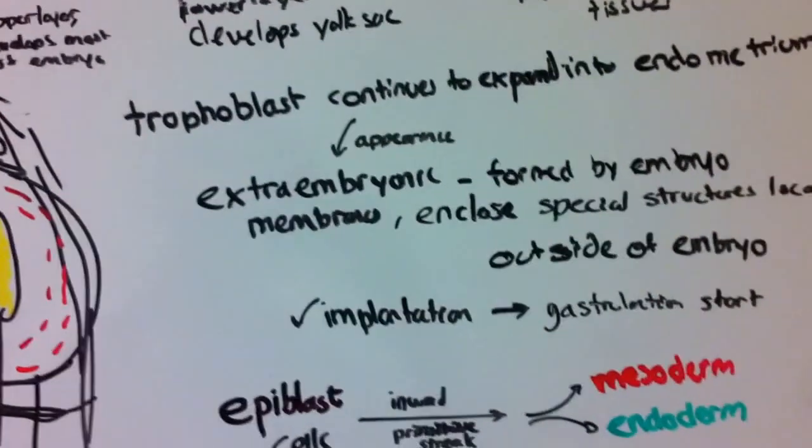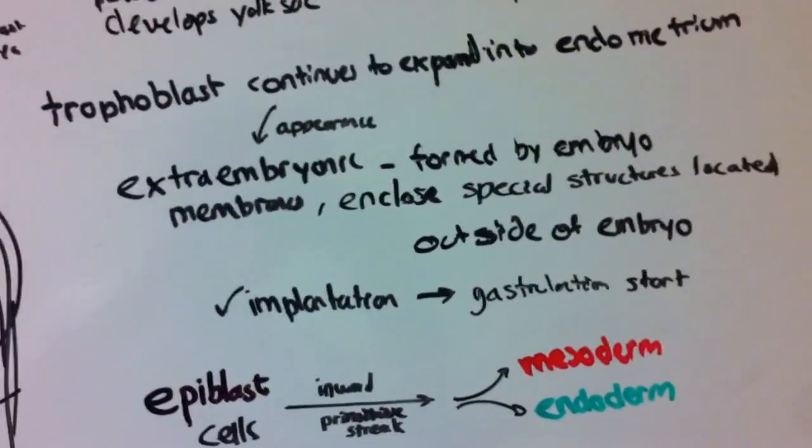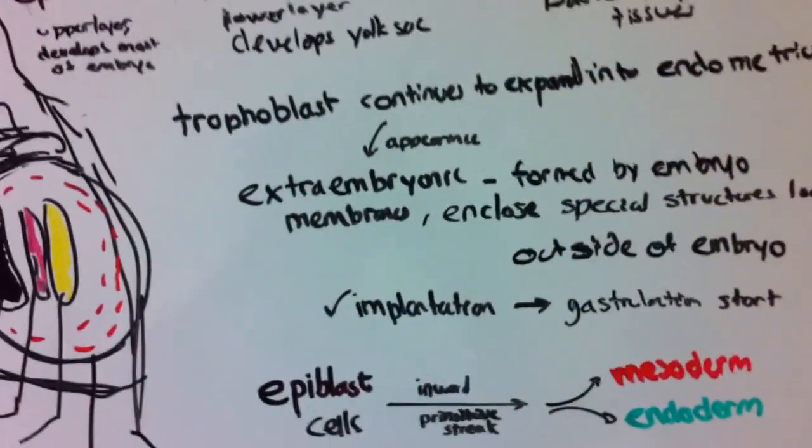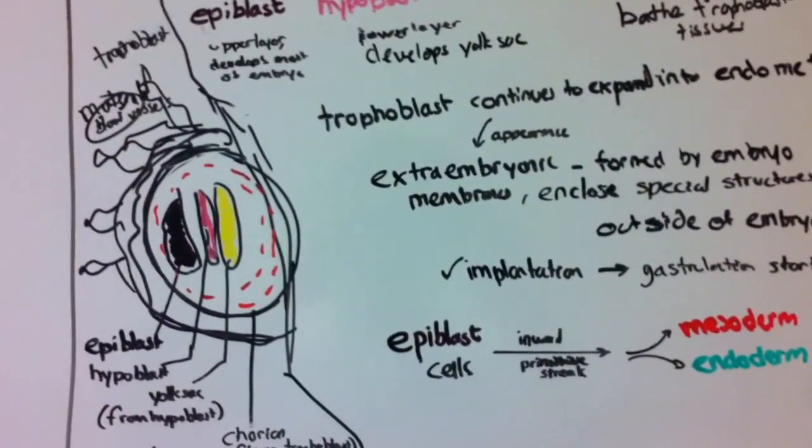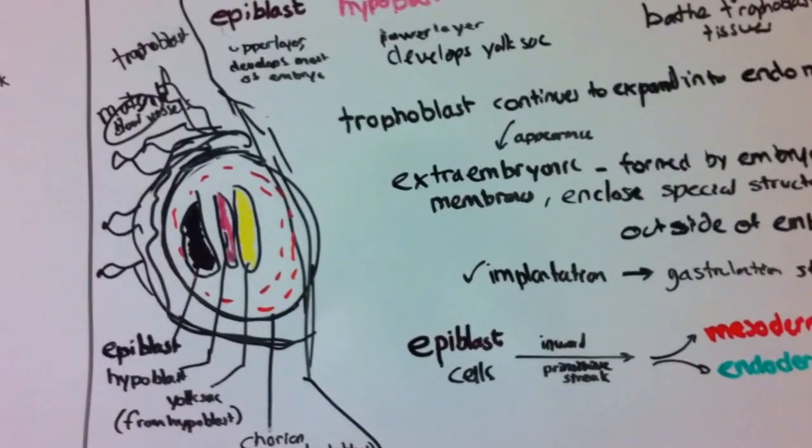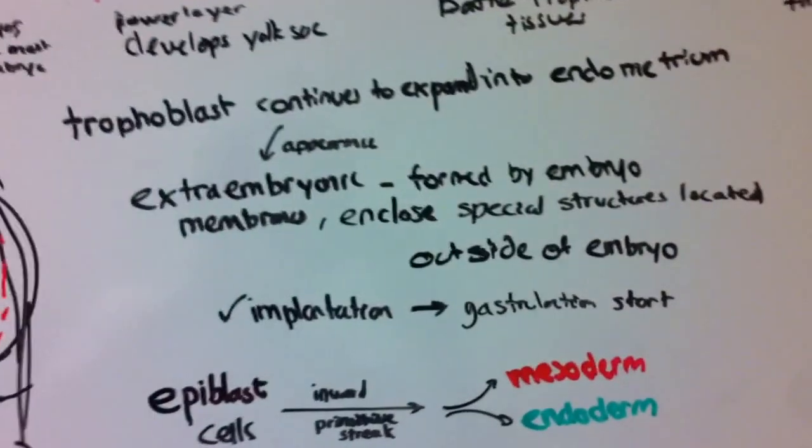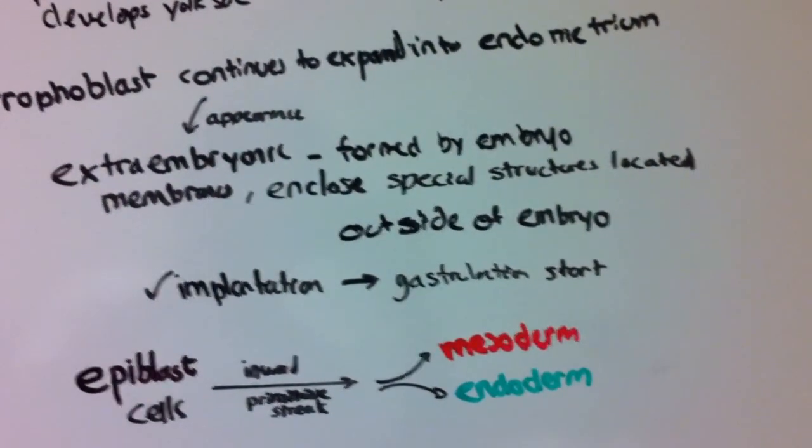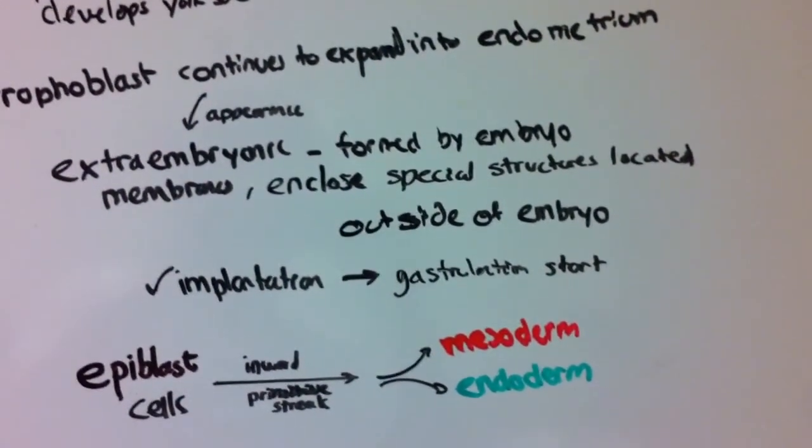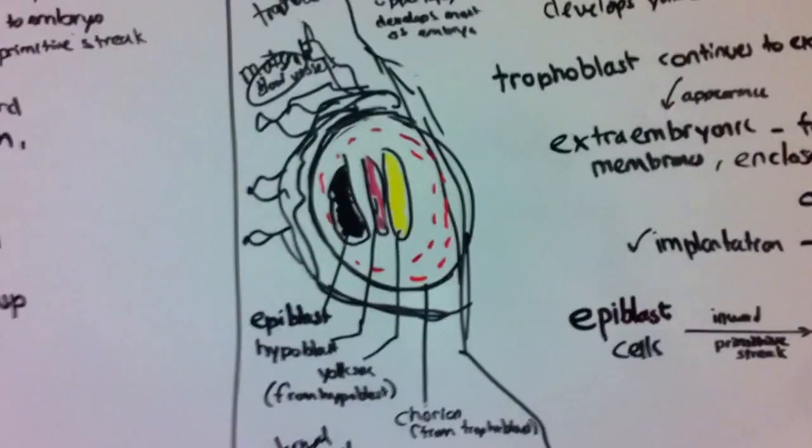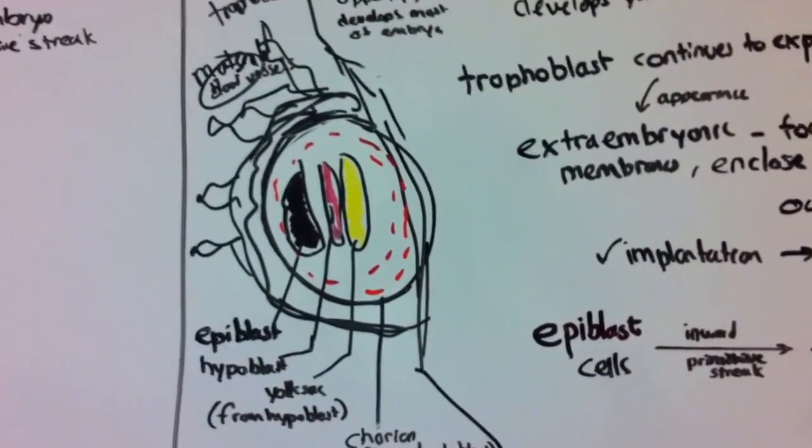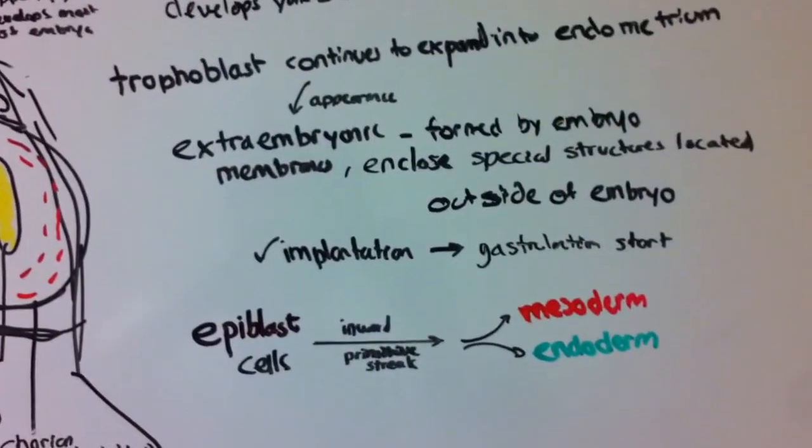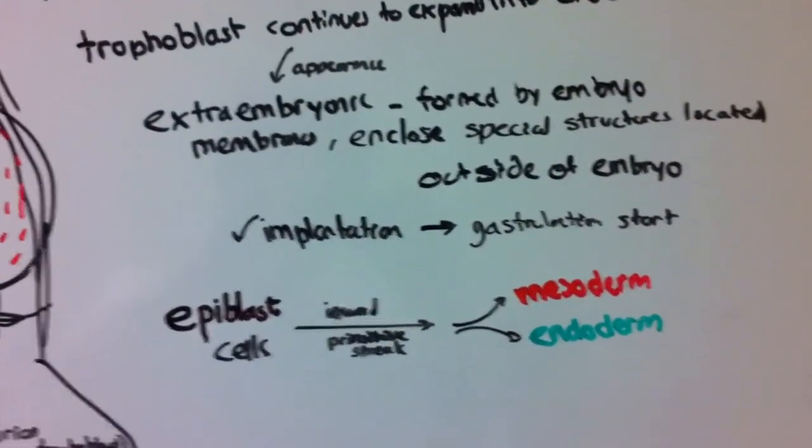As we progress through gastrulation, trophoblast will continue to expand into the endometrium. This will begin the appearance of extraembryonic membranes. Extraembryonic membranes are formed by the embryo and enclose special structures located outside of it. After implantation, we can start our gastrulation process.